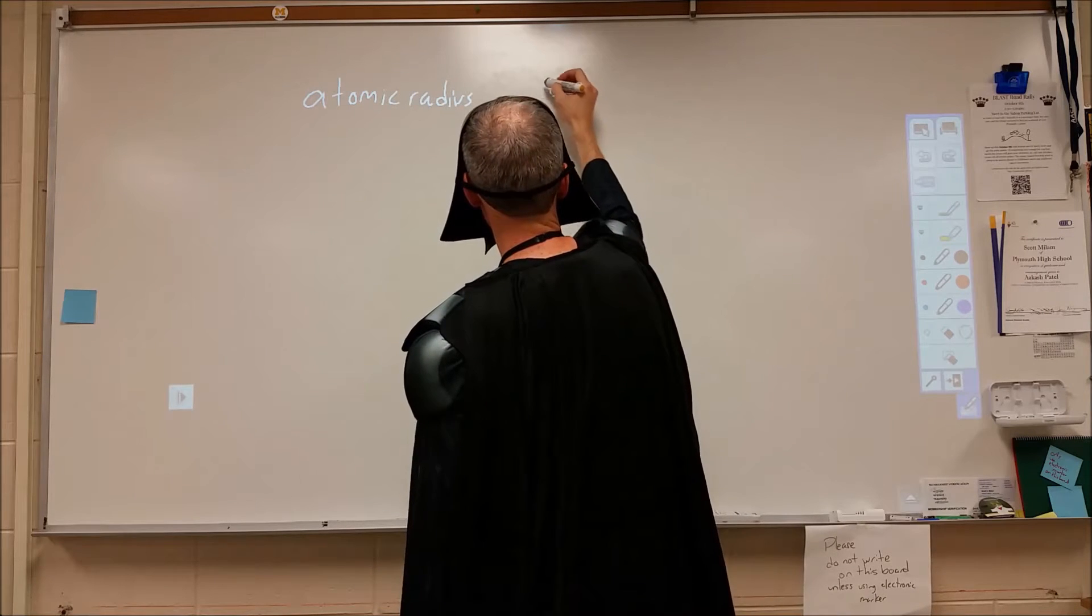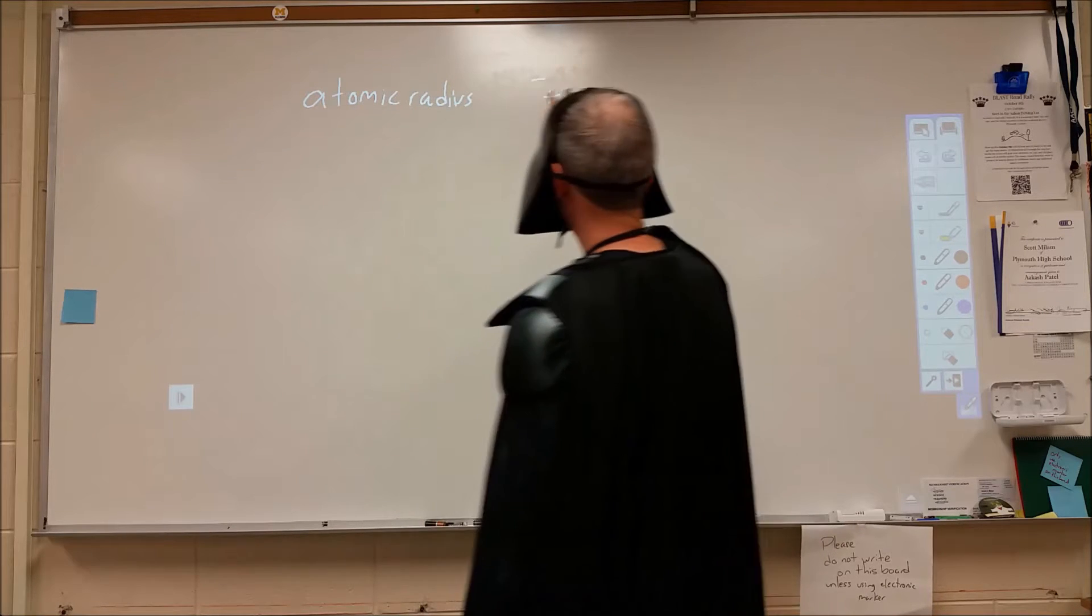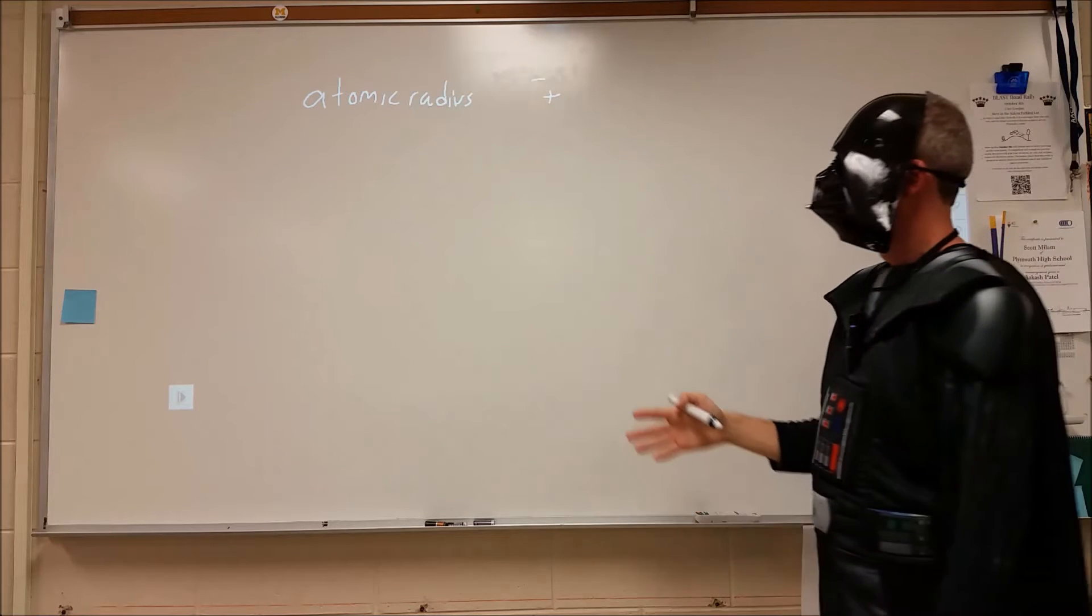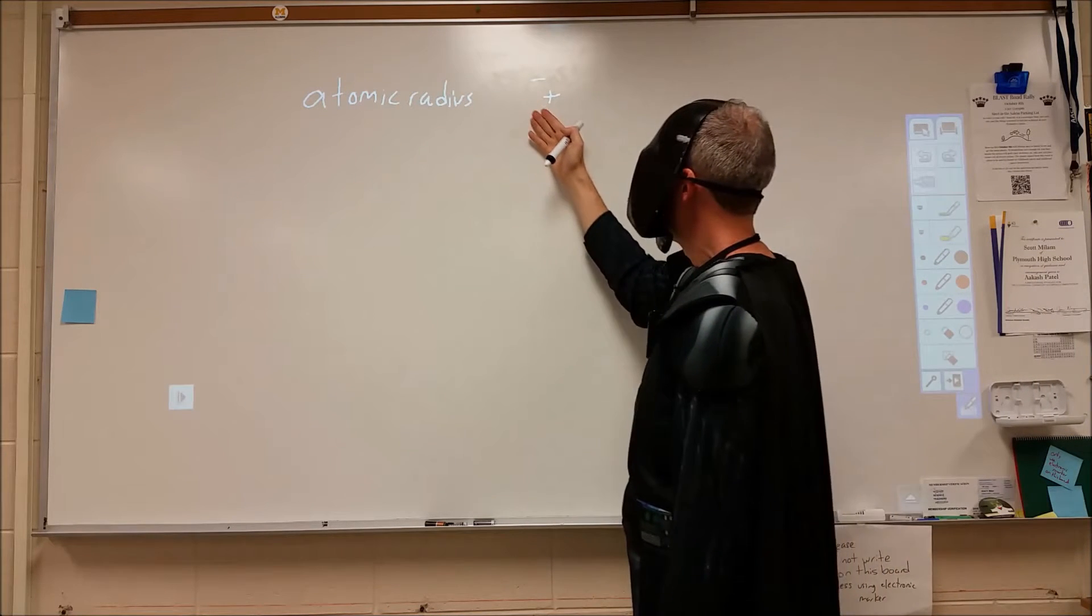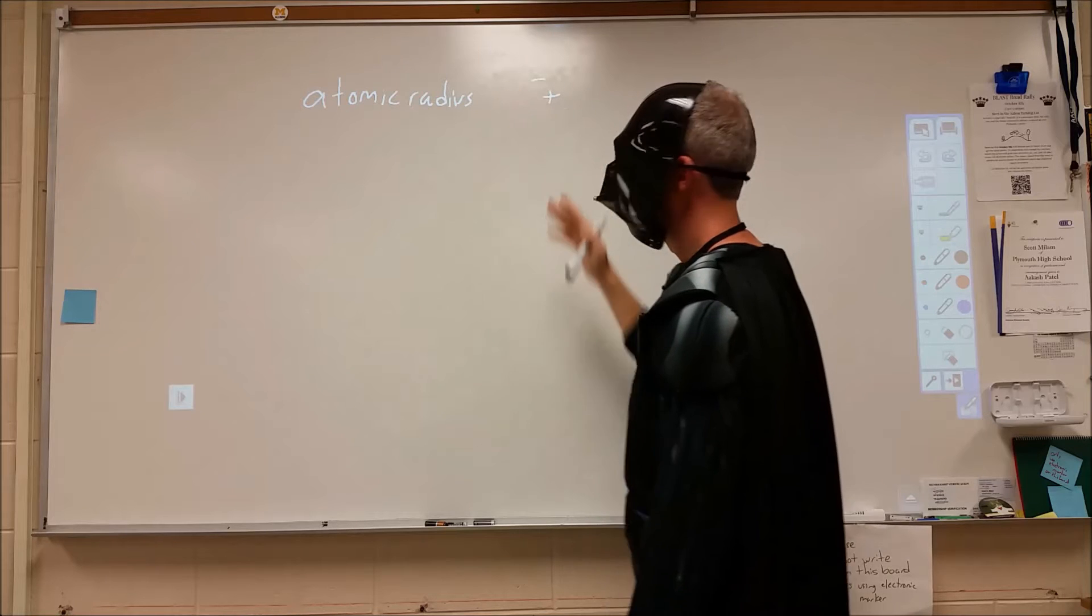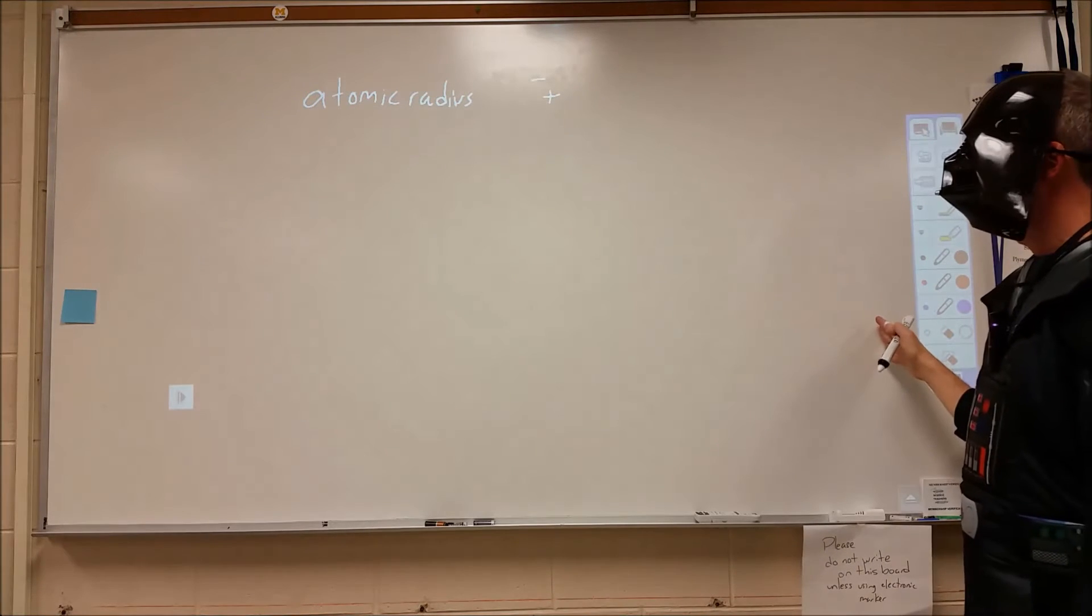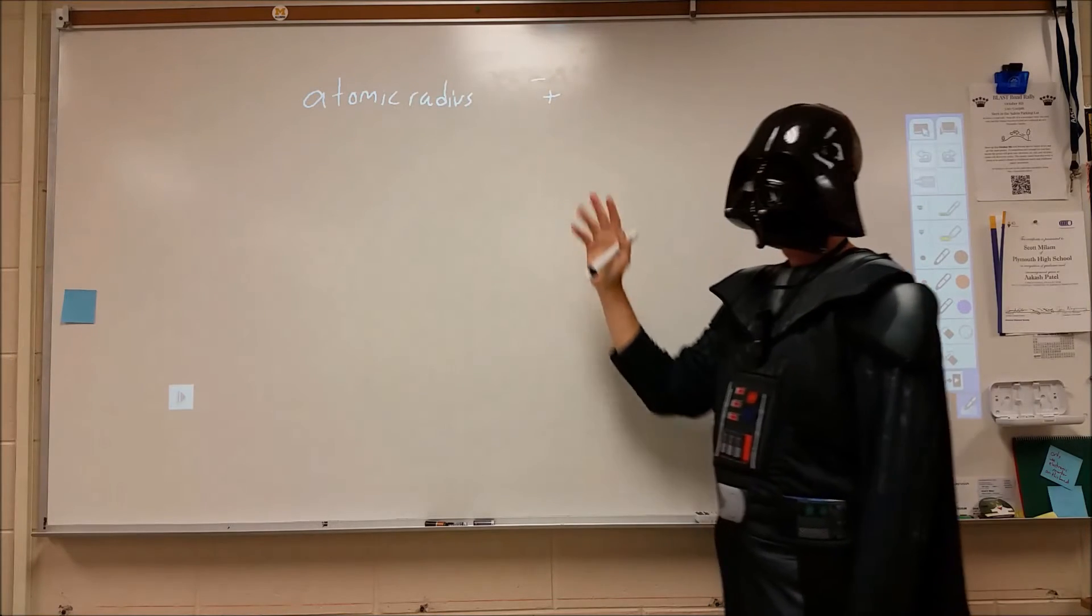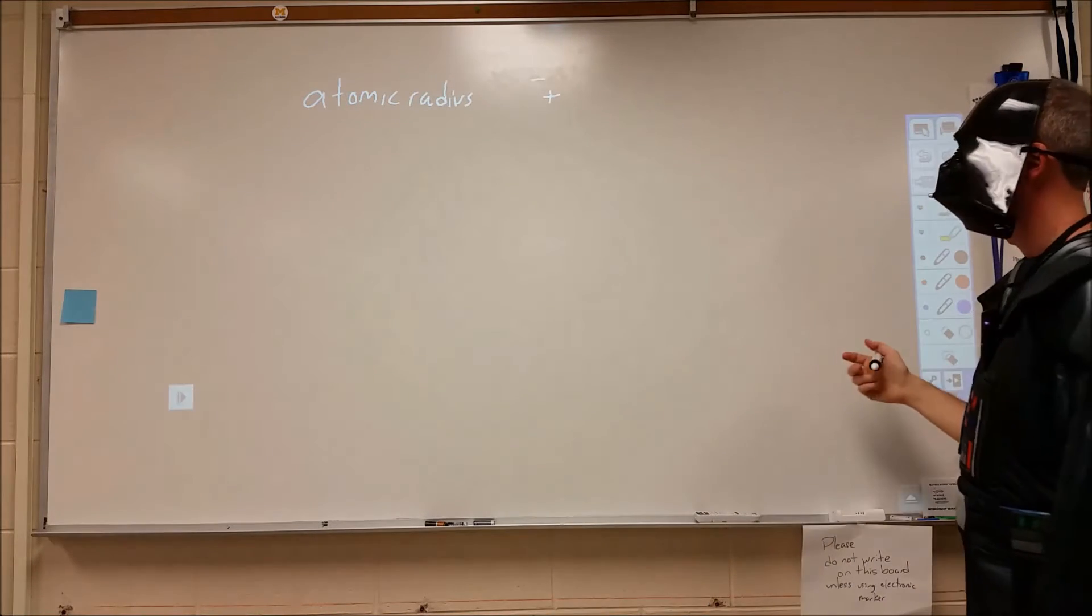So when you have your nucleus and your electrons, that electron is distributed over a space that really is infinite. And so what we want to do is we want to come up with a reasonable way to define where our limit of the atom is. In other words, that electron could be well over here, but maybe most of the time it's within this region. So how do we define a cutoff point for the atom?